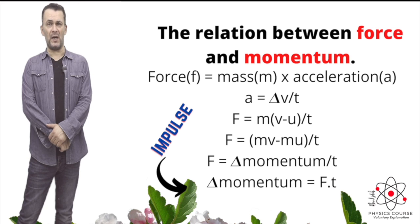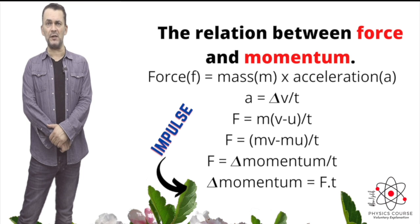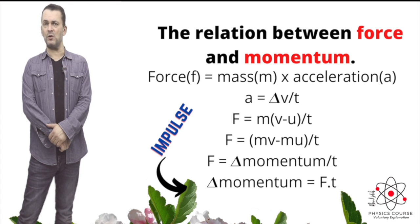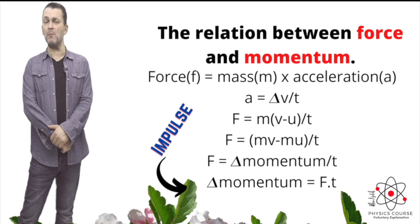By cross multiplication, the equation becomes: change in momentum equals force times time. If the change in momentum is constant, then force and time are inversely proportional — if the time of contact between two bodies increases, the force decreases, and vice versa. This explains why glass breaks when struck by a hard one-kilogram object but not a soft one of the same mass: a shorter contact time means greater force, and a longer contact time means less force.